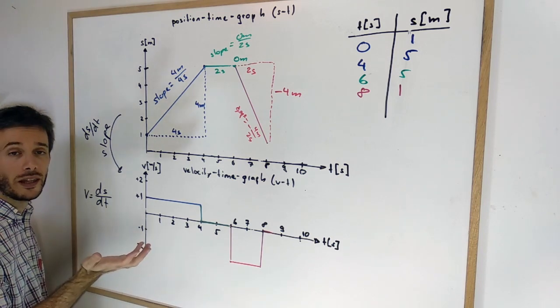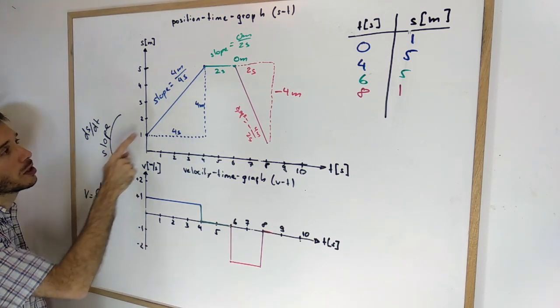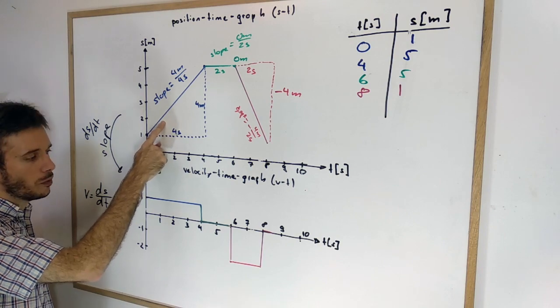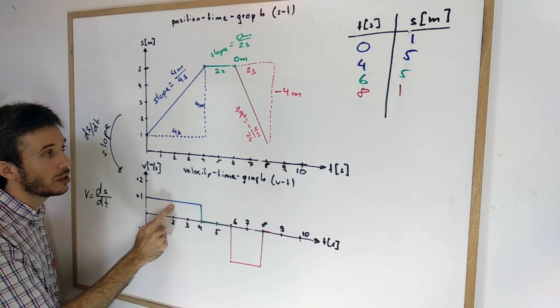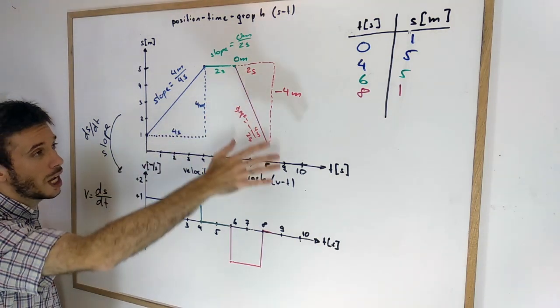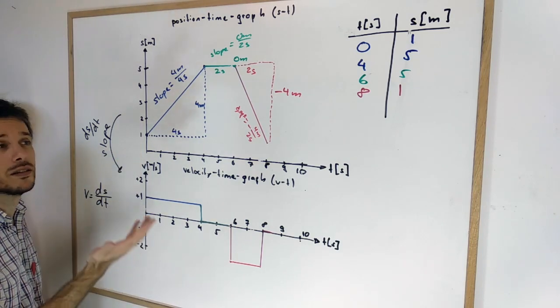For those of you that didn't take calculus yet, this corresponds to the slope of this graph. So if I want to figure out the velocity based on a position time graph, all I have to look at is the slope.